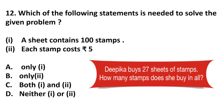Question number 12. Which of the following statements is needed to solve the given problem? Deepita buys 27 sheets of stamps. How many stamps does she buy in all? Statement 1: a sheet contains 100 stamps. Statement 2: each stamp costs rupees 5. To find the total number of stamps in 27 sheets, we only need statement 1, which tells us how many stamps are in one sheet. Answer is option A, only statement 1.